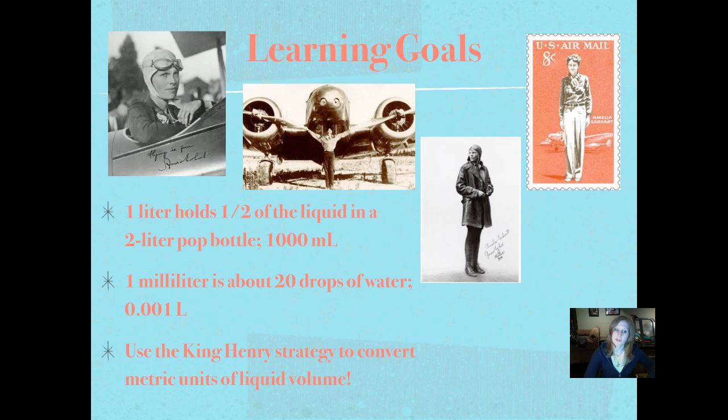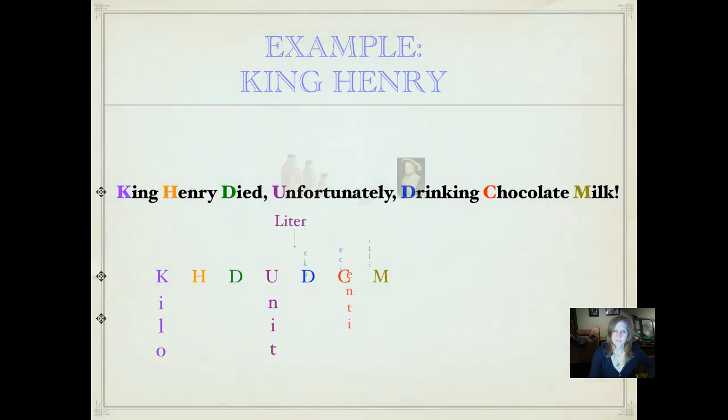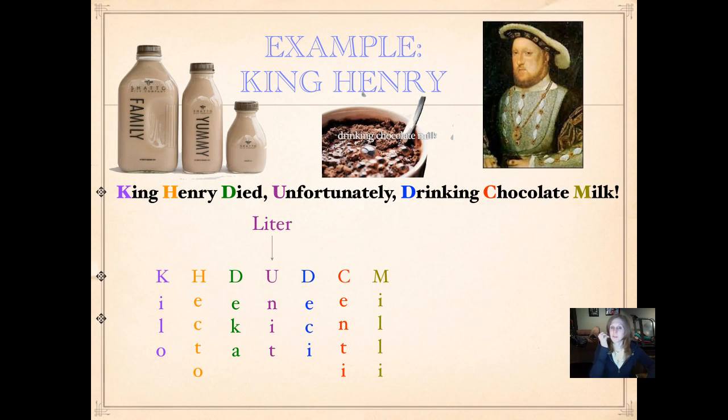And you can see that it's so tiny that a milliliter is one thousandth. I wrote that in decimal form instead of fraction form, just as a review. One thousandth of a liter. So if you took that bottle of pop and divided it up into a thousand parts, that little smaller bottle of liter bottle of pop, one thousandth of it is going to be a milliliter. We're going to use the King Henry strategy to convert metric units of liquid volume. Here we're back to our King Henry example. And if you recall, each letter of that acronym stands for a metric unit that we need to know.